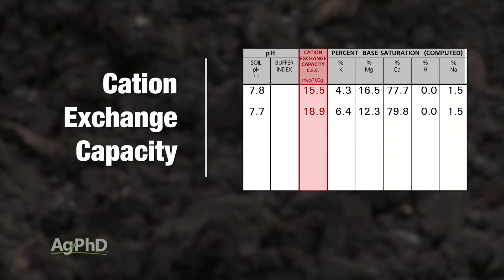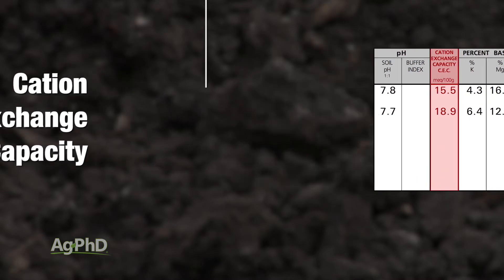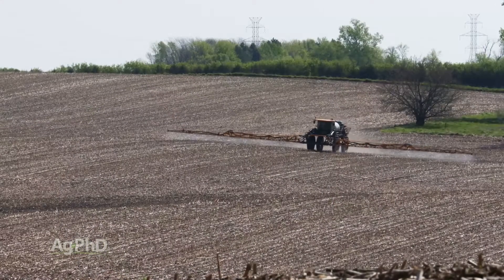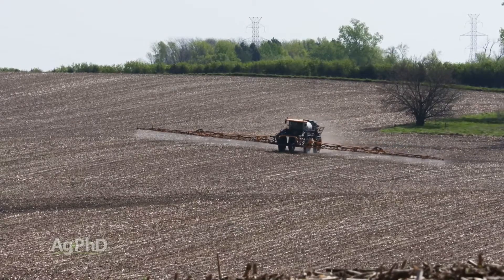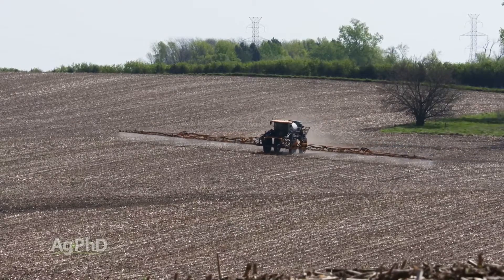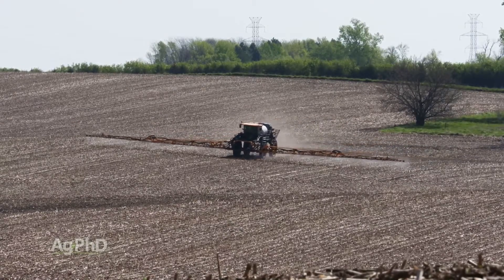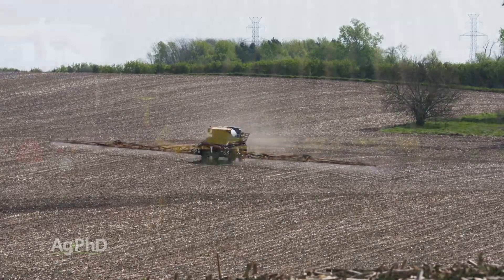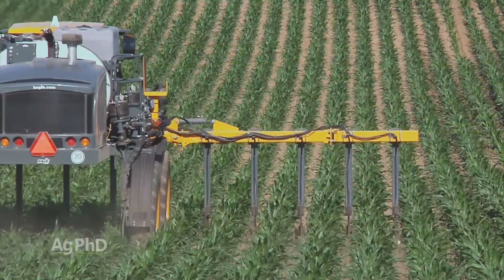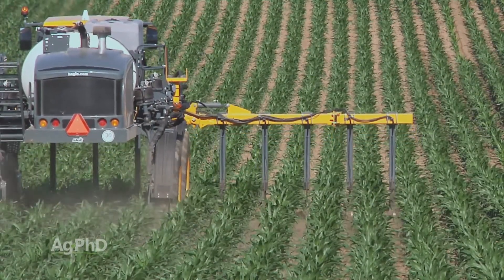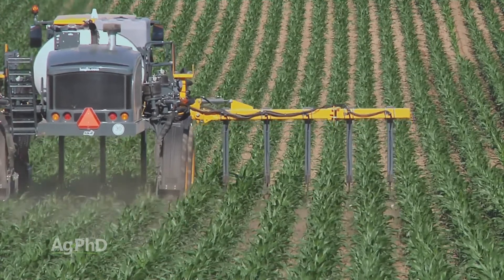Cation exchange capacity can be used for a number of things. For example, on a herbicide label it might say: if you are above a certain level of cation exchange capacity, you should increase the rate. And most commonly, we'll look at this cation exchange capacity number as an indication of how much nitrogen our soils can safely hold at any one time.